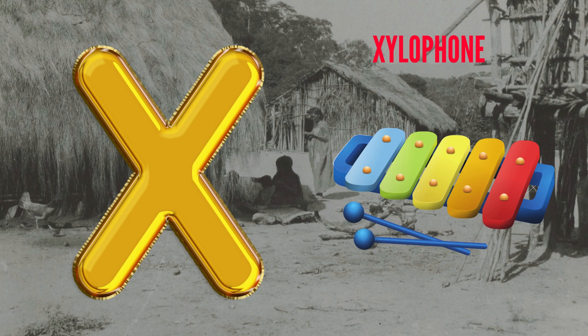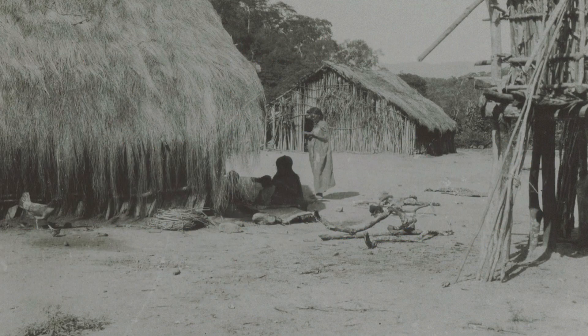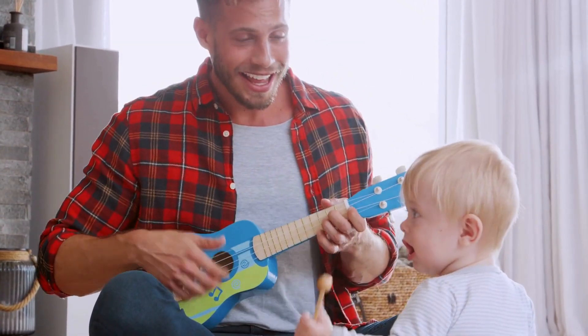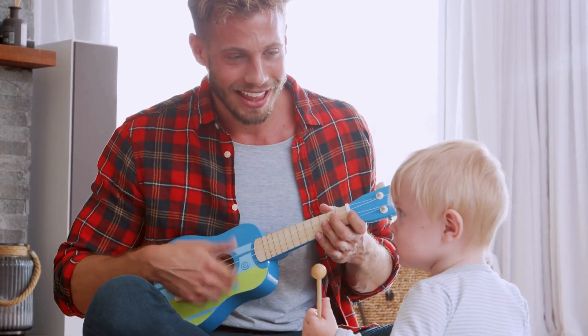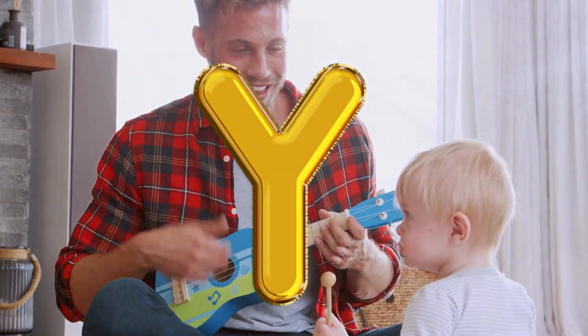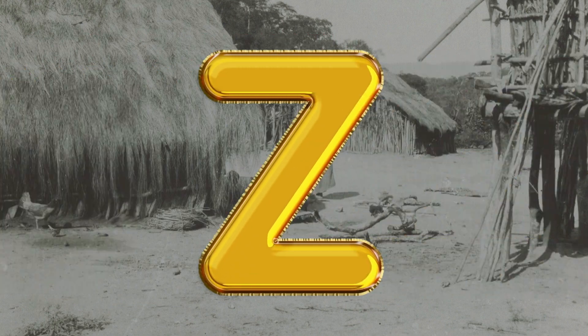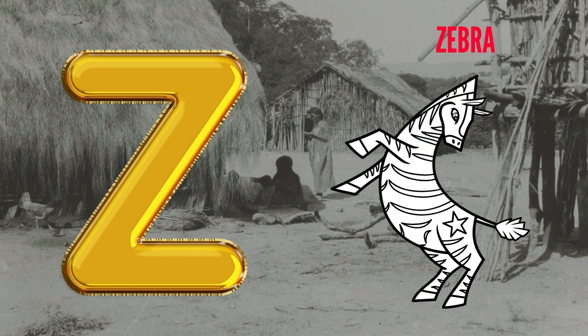X is for Xylophone. Z, Z, Xylophone. Y is for Yellow. Ye, ye, Yellow. Z is for Zebra. Z, Z, Zebra.